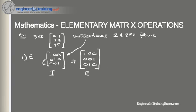Once we define E, we need to pre-multiply matrix A by E. Pre-multiplying means E will be in front of A. So E is: row 1: 1, 0, 0; row 2: 0, 0, 1; row 3: 0, 1, 0.